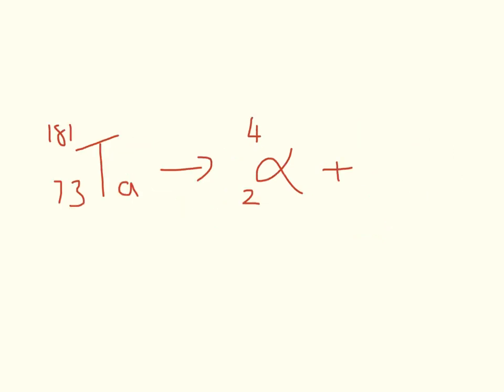They might write this in the exam in a slightly different way. Putting the alpha decay over this side is exactly the same thing. Something plus 4 makes 181, so 181 minus 4 is 177. 73 minus 2 equals 71. This number is the one we need to look up on our periodic table and it is lutetium.